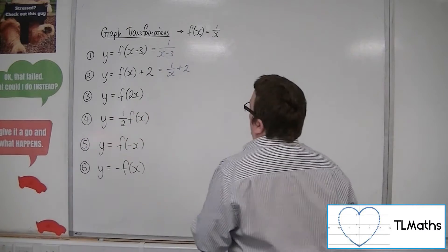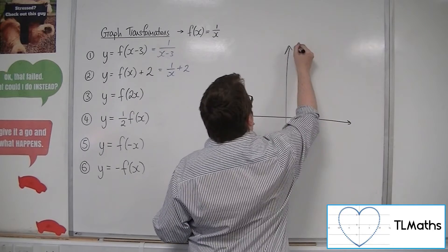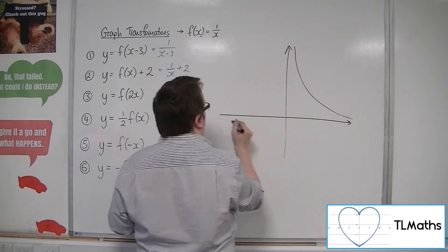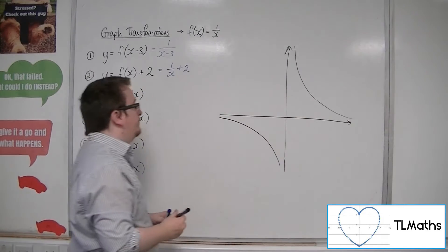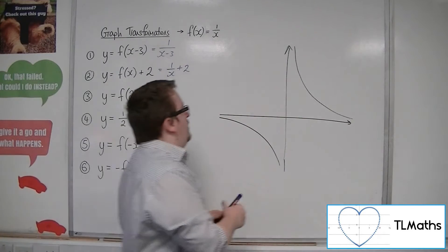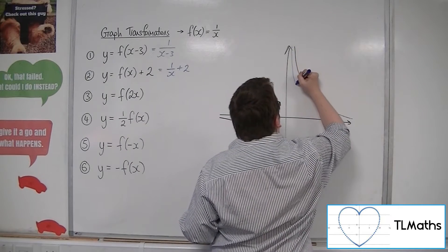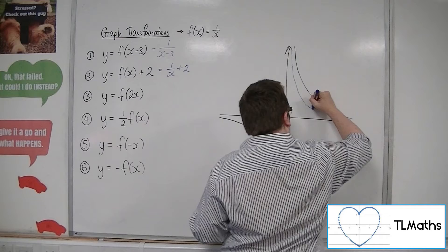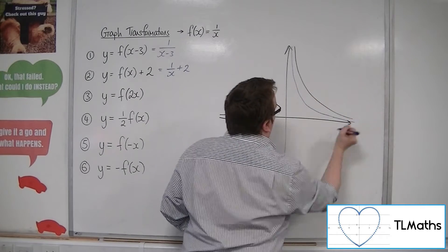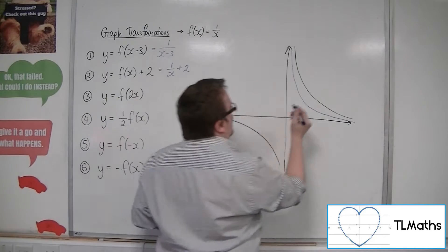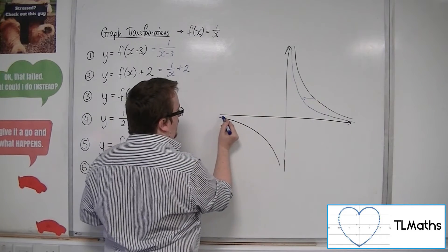f of 2x would be a stretch factor of 1 half in the x direction. So, here's my original curve. Now, if I'm going to stretch it by factor of 1 half, all of the x coordinates of the original curve will be halved. And so, the curve will look something like this.